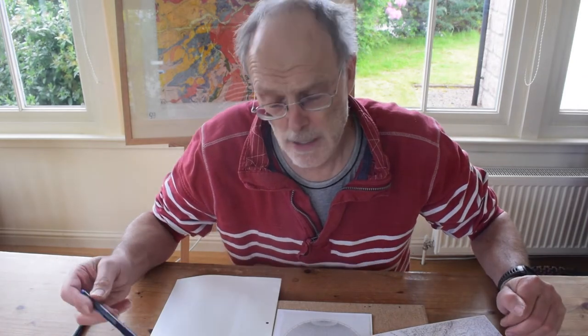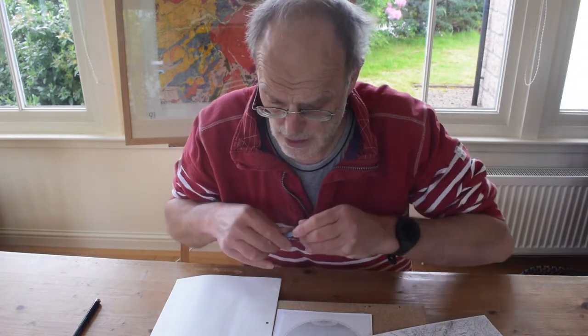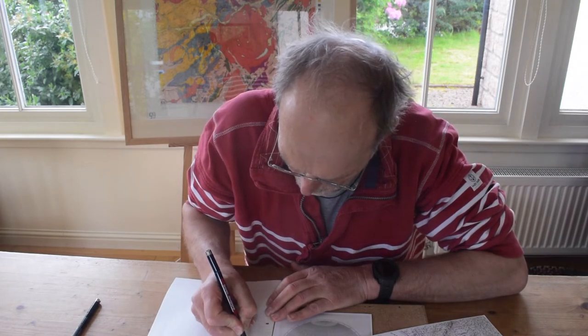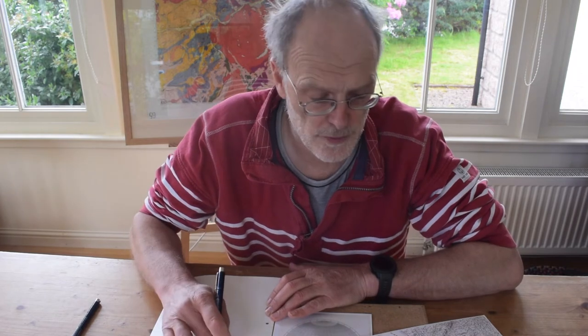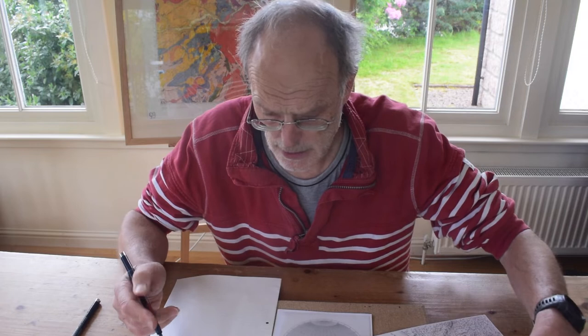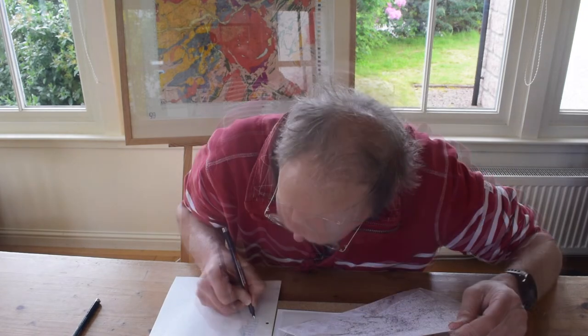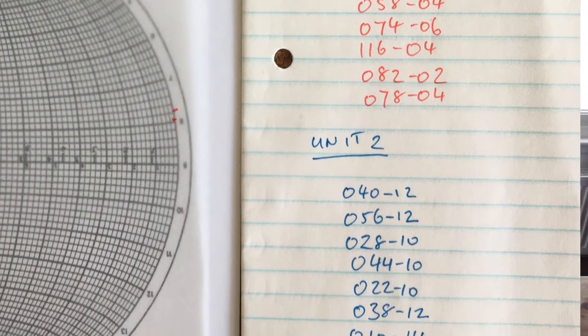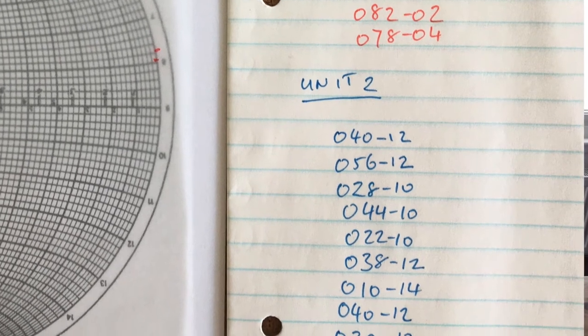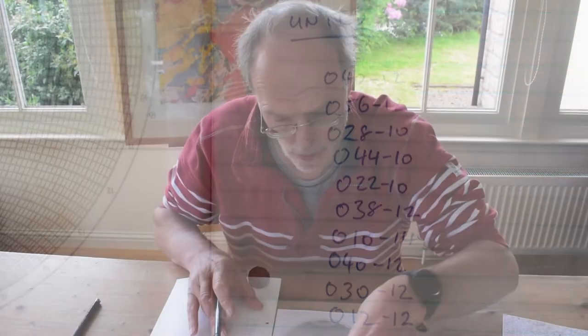So now what we're going to do is compile the data for the next unit, which I'll call unit two, and we'll plot that on a new piece of tracing paper. Let's compile up some bedding readings for this unit two — I'll use a different colour so we don't get them confused. There we've got the data for unit two: ten bedding readings. So now we're going to take these onto a new piece of tracing paper to do our plotting.